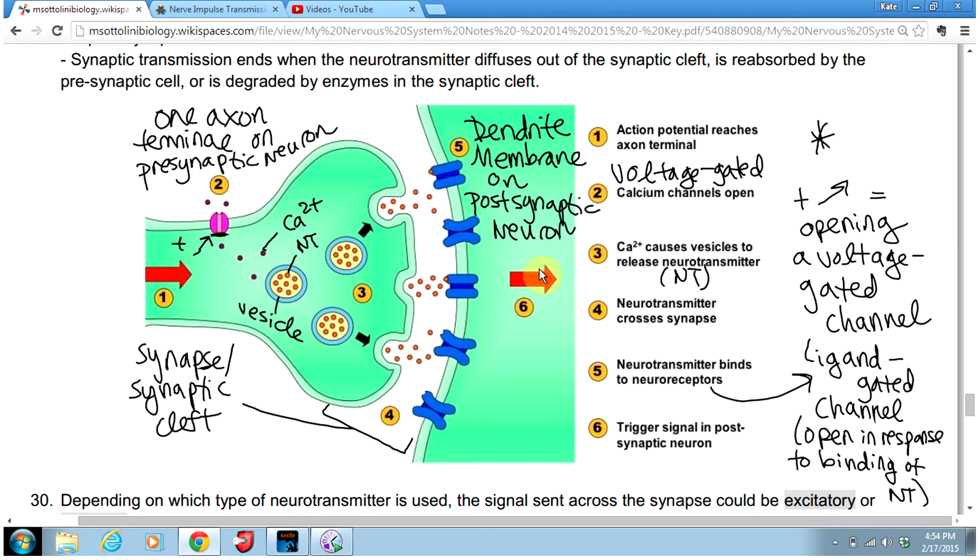In our previous video on action potentials, we did not refer to the stimulus as a ligand-gated channel opening. Instead, we just called it a stimulus that causes positive charge to enter. But now we know that the stimulus is neurotransmitters binding to the ligand-gated channels and allowing them to open, which causes Na+ or positive charge to come into the cell.